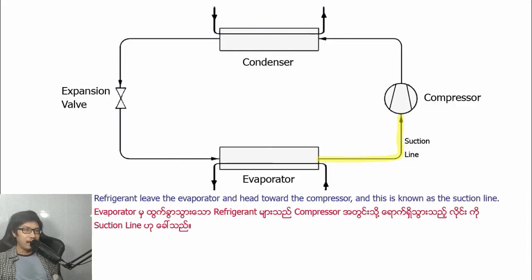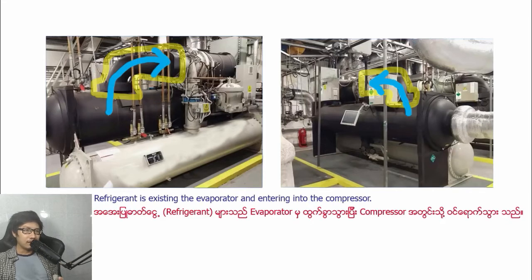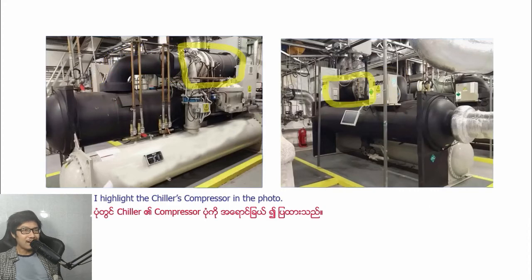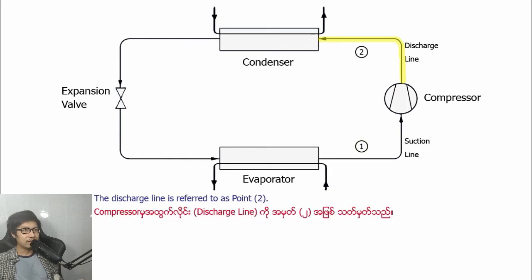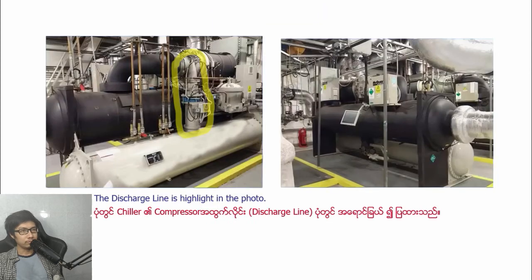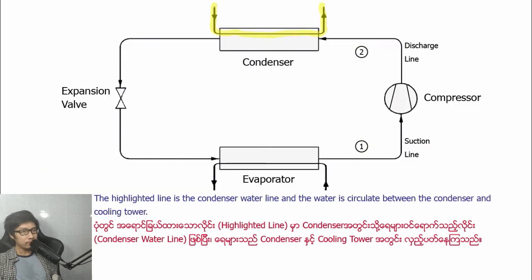Refrigerant leaves the evaporator and heads to the compressor, and this is known as the suction line. We refer to the suction line as point one. I highlight the suction line of the chiller in the photo. Refrigerant is leaving the evaporator and entering into the compressor. As the refrigerant leaves the compressor, it heads to the condenser via the discharge line. The discharge line is referred to as point two and is highlighted in the photo.